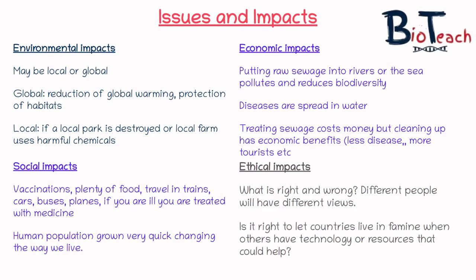Moving on to economic impacts — the word economic normally relates to money, but it can also relate to how well resources are used. For example, putting raw sewage into rivers or the sea can pollute and reduce biodiversity. That has an environmental impact, but there's also an economic downfall — it's going to cost a lot of money to treat and clean up the sewage. The positive implication of cleaning it up has economic benefits too, because with less disease being spread you could attract tourists, particularly if it's an area of natural beauty.